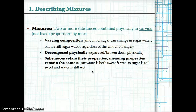To summarize: mixtures have two or more substances combined physically in varying or changing proportions by mass. The amount of something can change, but it's still the same kind of mixture. Changing the amount doesn't change what it actually is.